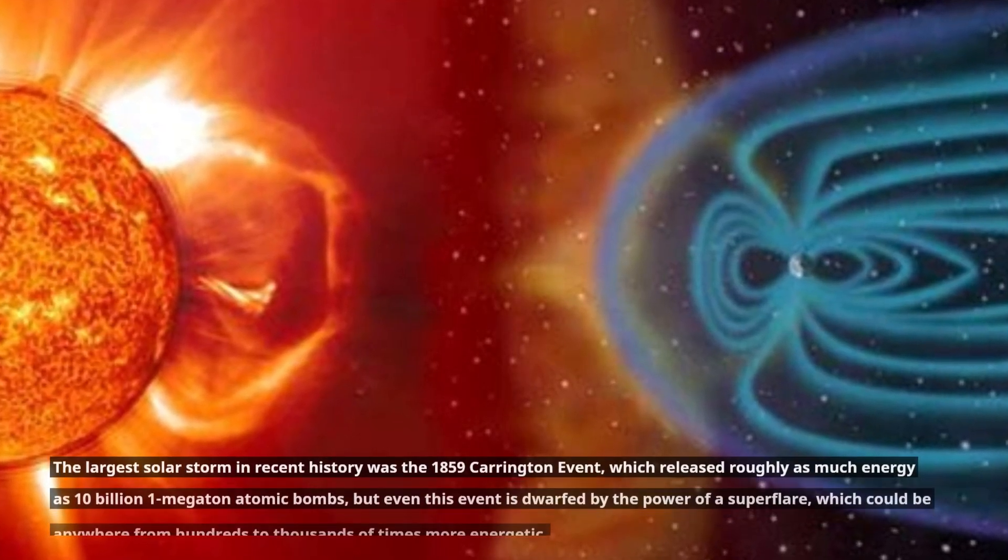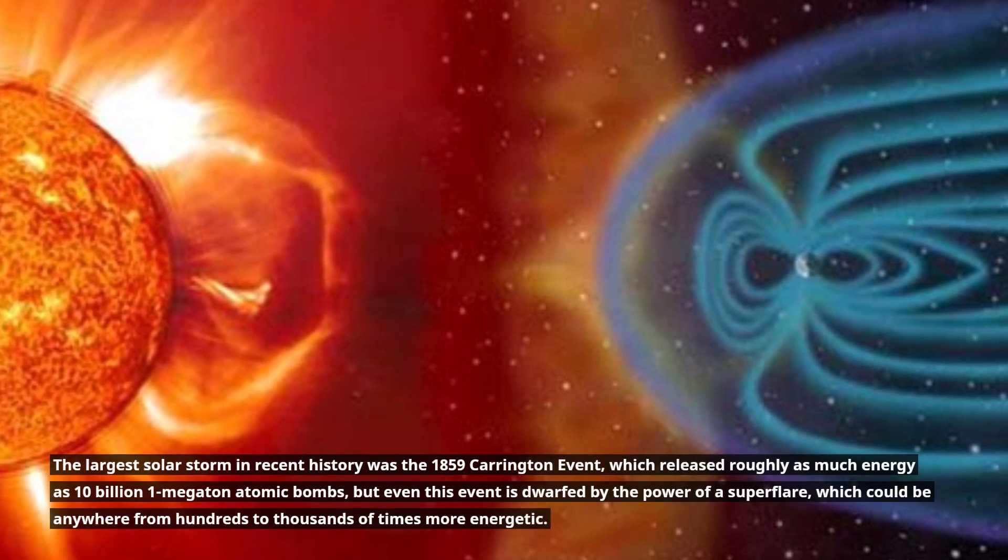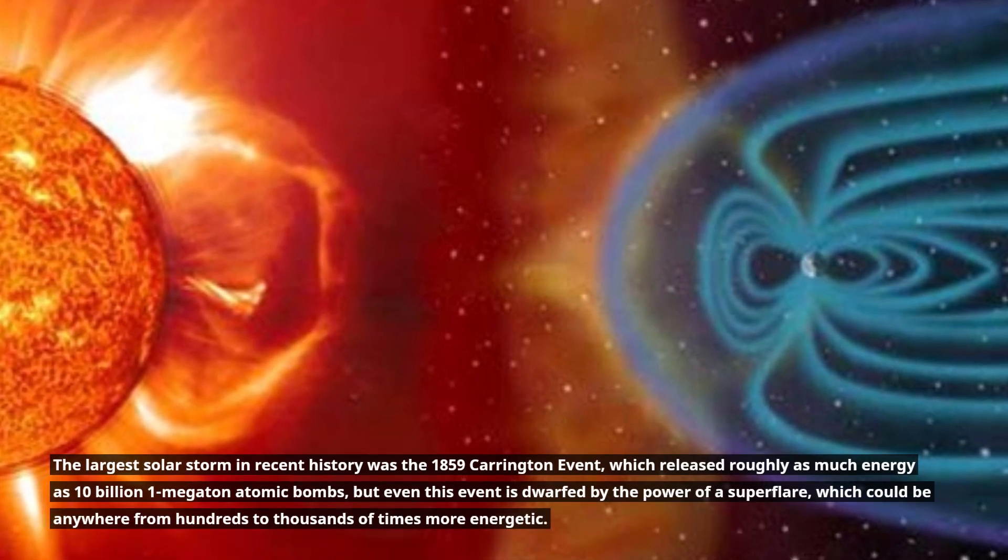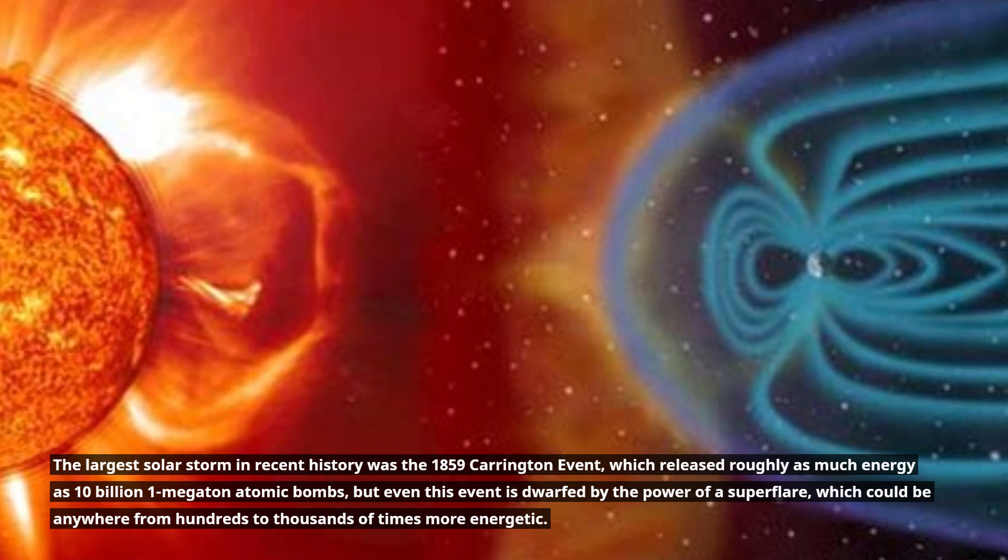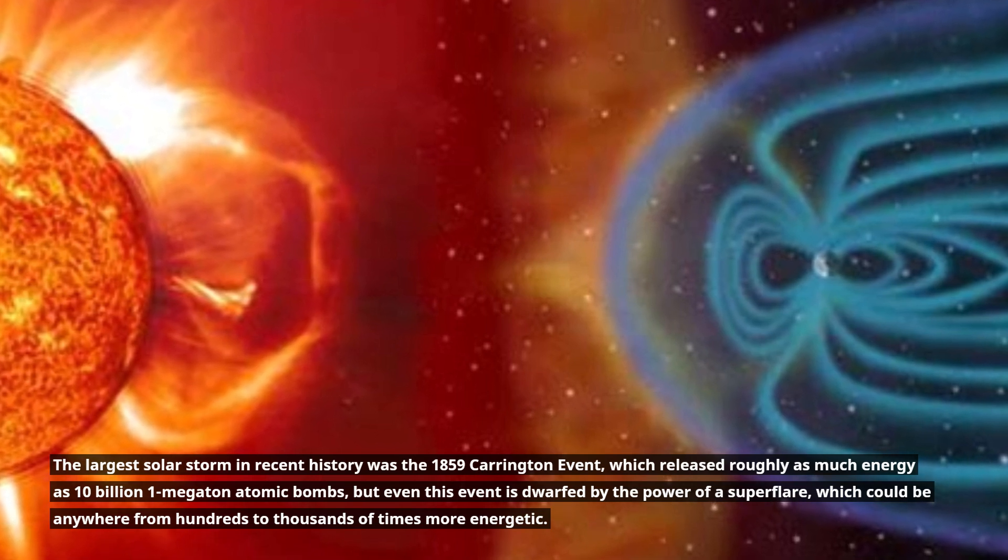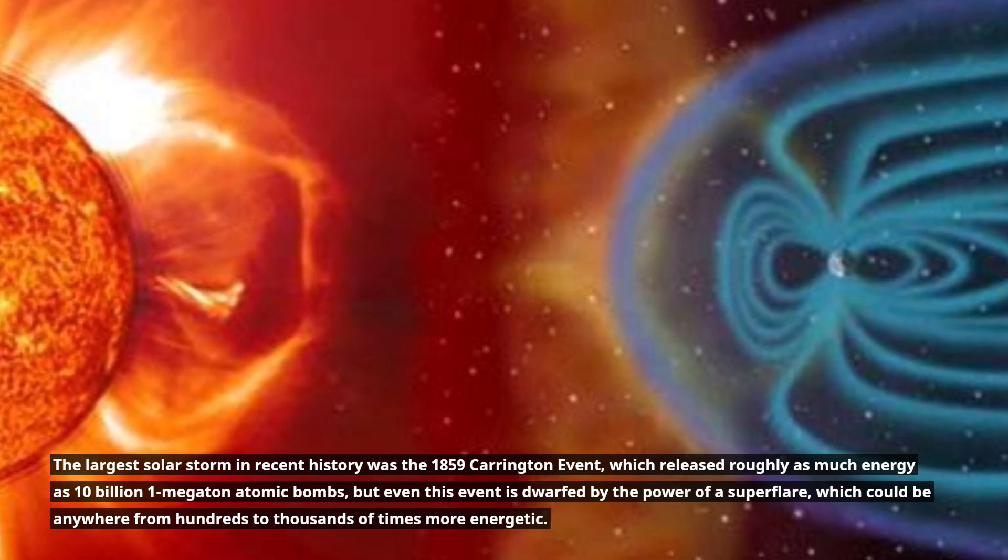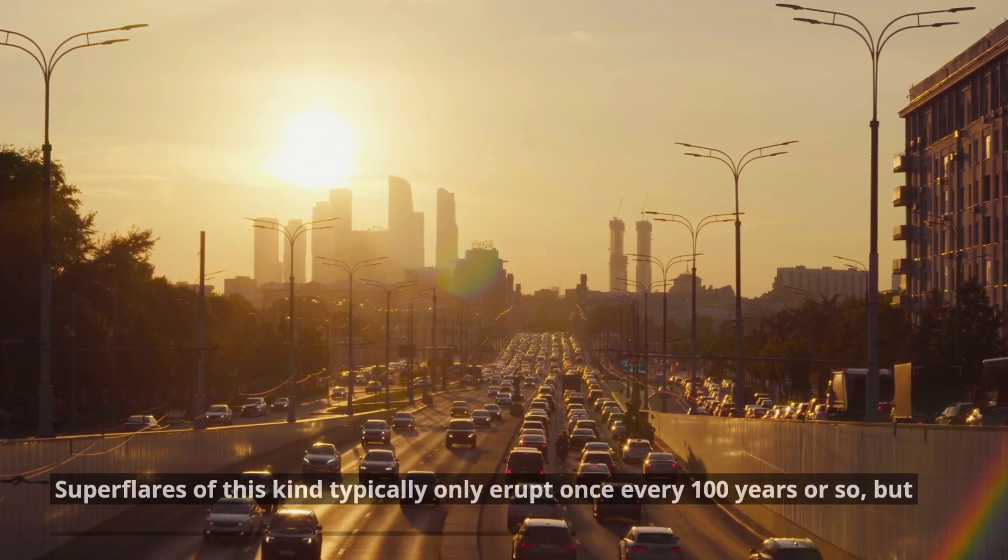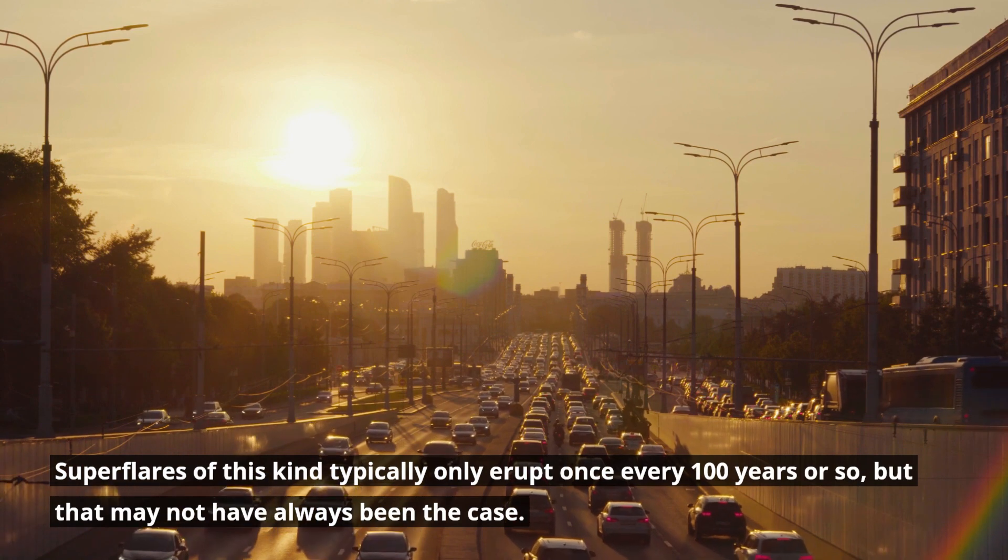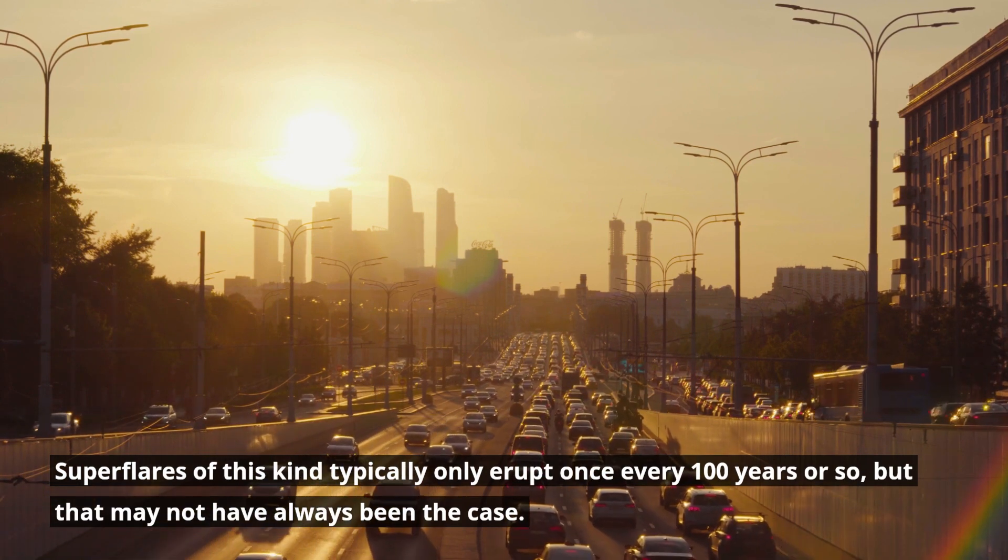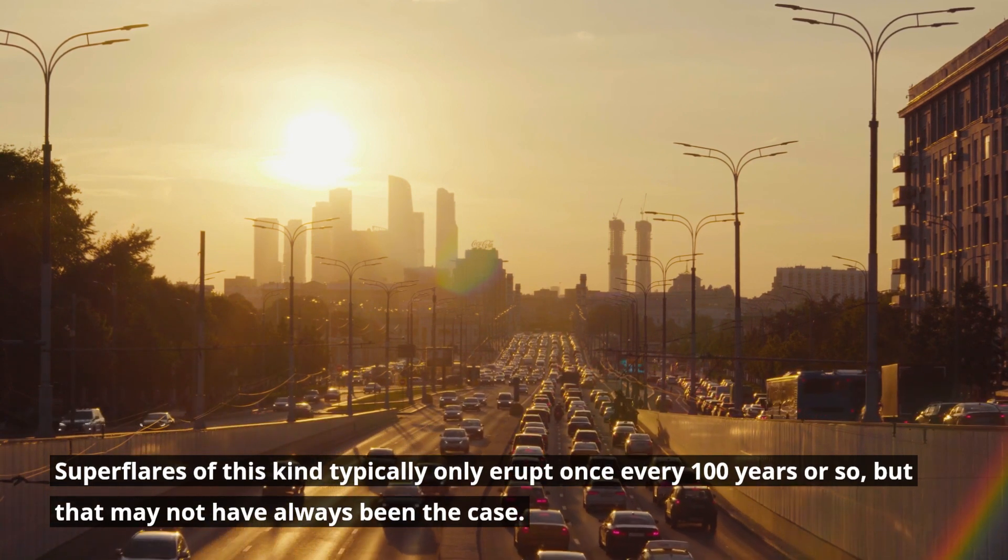The largest solar storm in recent history was the 1859 Carrington event, which released roughly as much energy as 10 billion 1 megaton atomic bombs. But even this event is dwarfed by the power of a super flare, which could be anywhere from hundreds to thousands of times more energetic. Super flares of this kind typically only erupt once every 100 years or so, but that may not have always been the case.